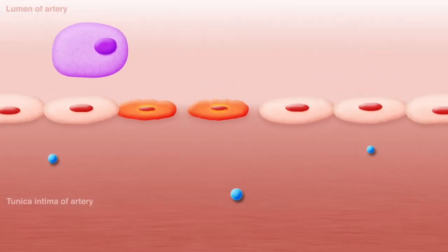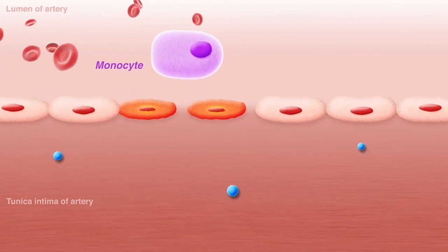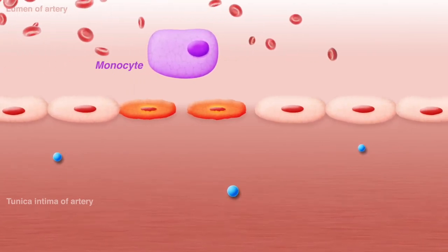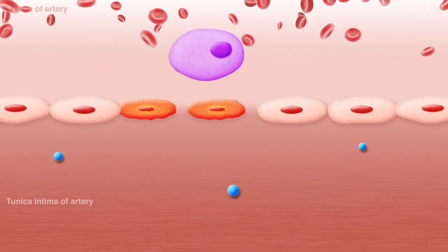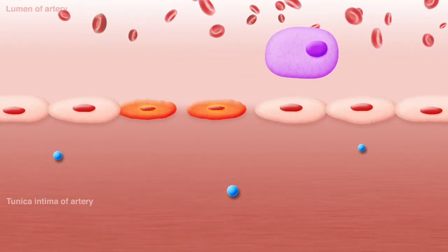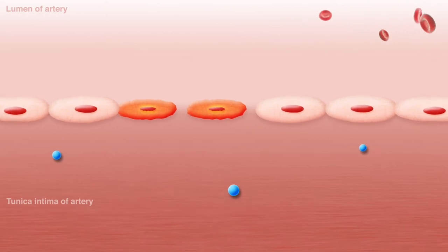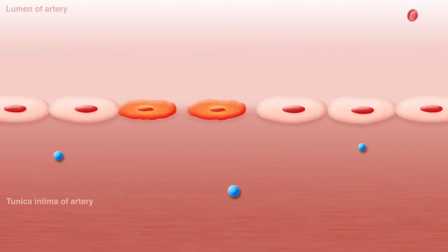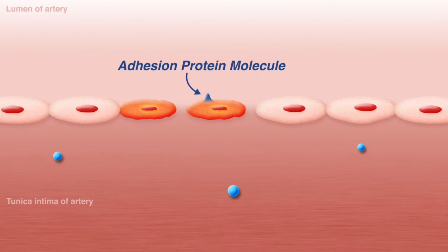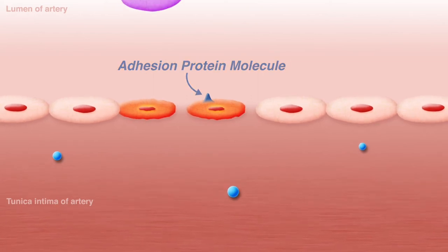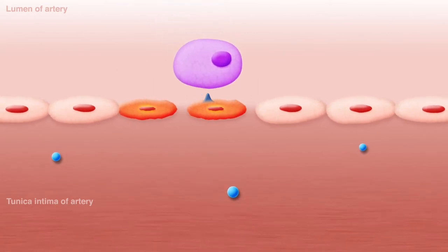White blood cells such as monocytes normally move freely through the blood vessels and do not attach to endothelial cells as they swim past. However, when endothelial cells are exposed to irritating stimuli or damage, they will express adhesion molecules that can capture nearby white blood cells.